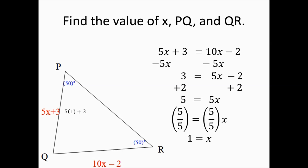Now we substitute 1 for X. For line segment PQ: 5 times 1 plus 3 equals 5 plus 3, which equals 8. For line segment QR: 10 times 1 minus 2 equals 10 minus 2, which equals 8. The final answer is 8 units for both sides.